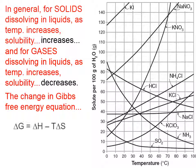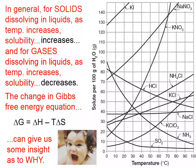The change in Gibbs free energy equation, delta G is equal to delta H minus T delta S, can give us some insight as to why.